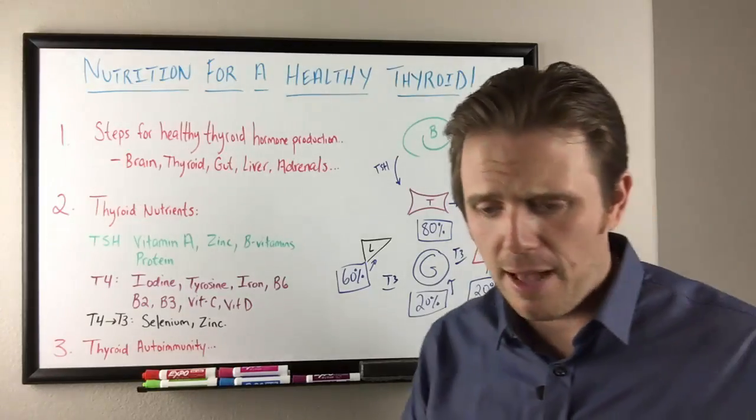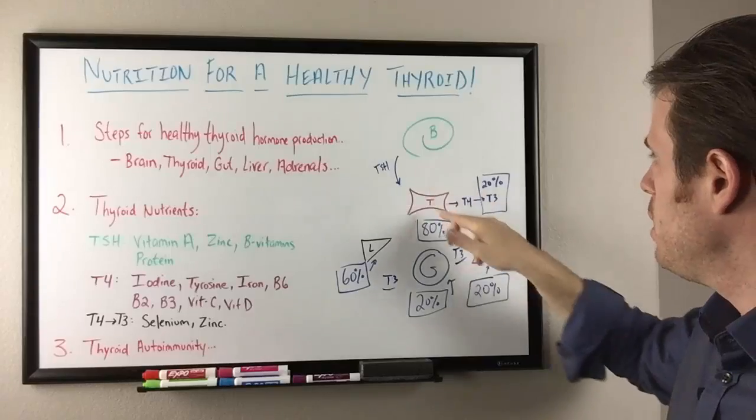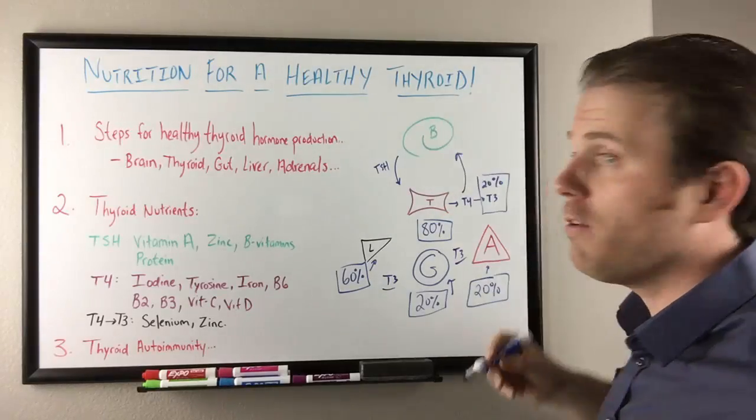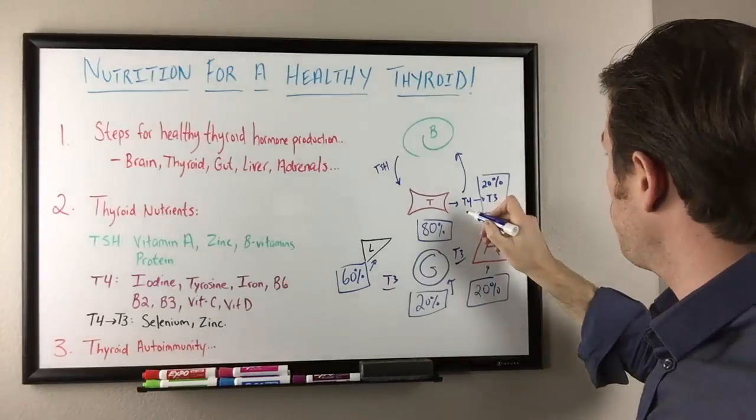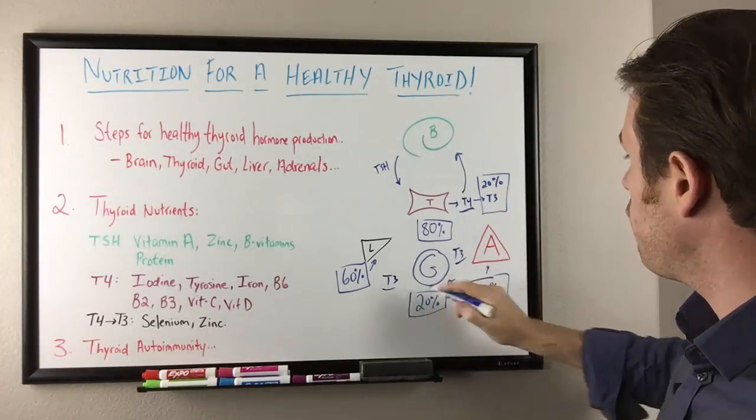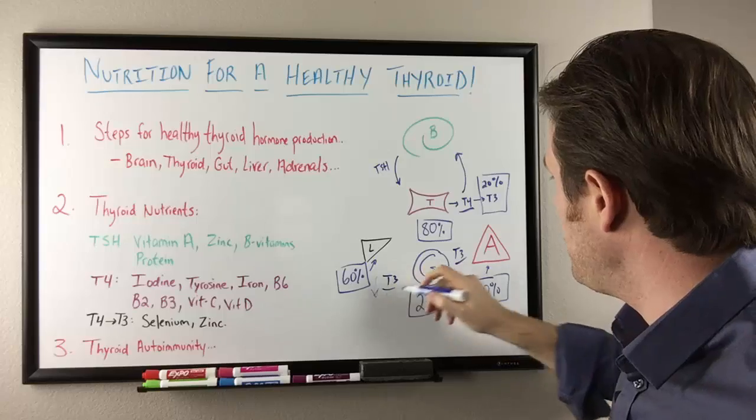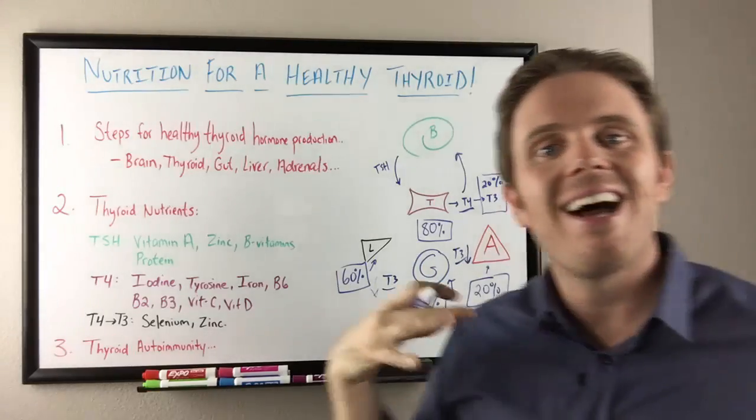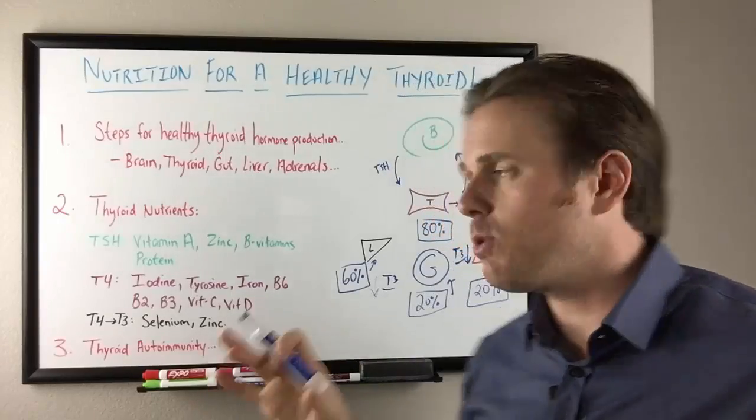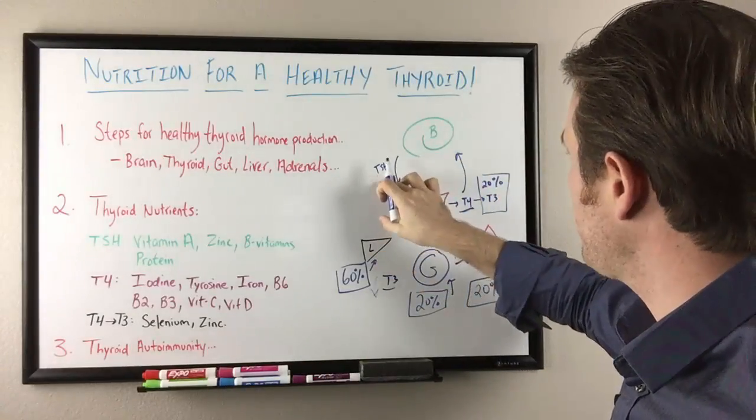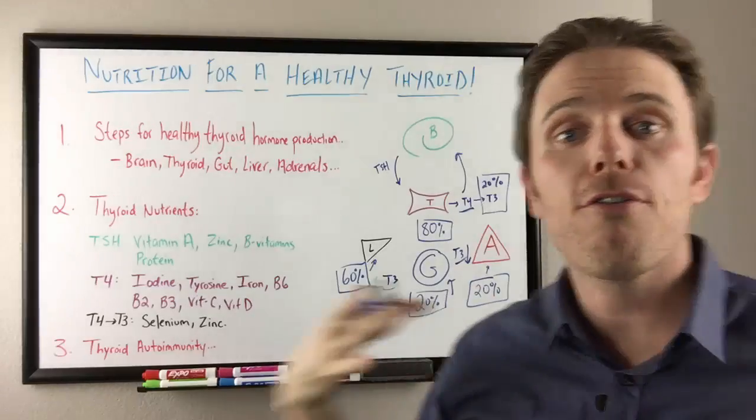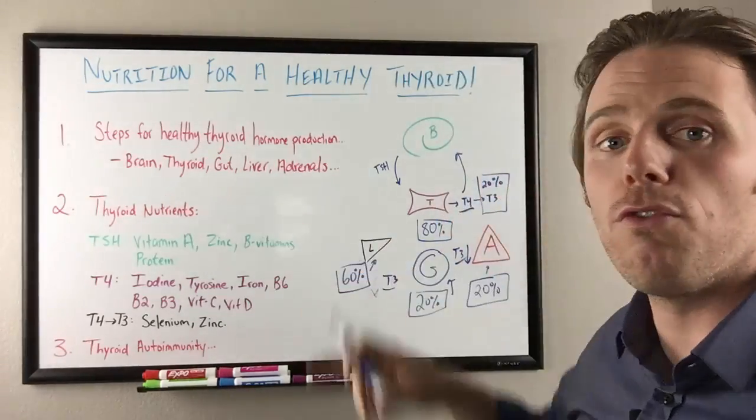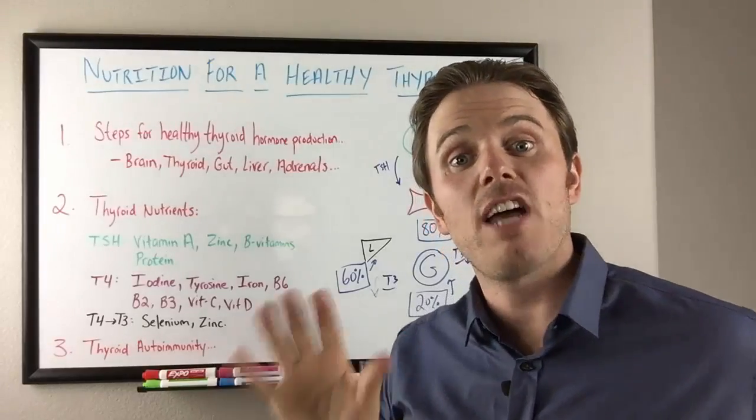A lot of times people may have fine levels of TSH because T4 feeds back into the brain better than T3. We could have normal levels of T4 but have low levels of T3 and it may not even be reflected in the TSH. I see that all the time in my patients. That's why we got to be very careful and look at TSH, T4 free and total, T3 free and total, and maybe even reverse T3 as well and the thyroid antibodies.